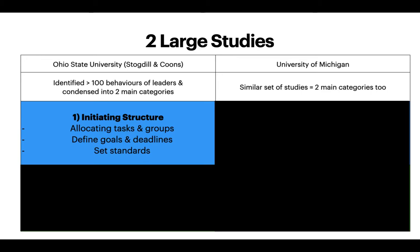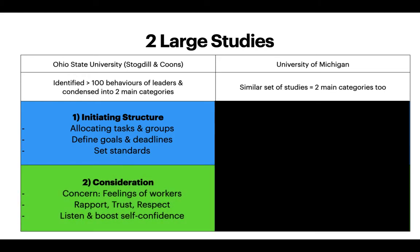On the Ohio side, the first category is called initiating structure — leaders who are good at allocating tasks and groups, defining goals, and setting deadlines and standards. Leaders also show consideration, which is concern for the feelings of their workers, building rapport, trust, respect, listening to their followers, and boosting self-confidence. So you can see both initiating structure and consideration.